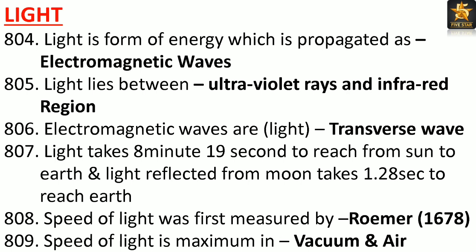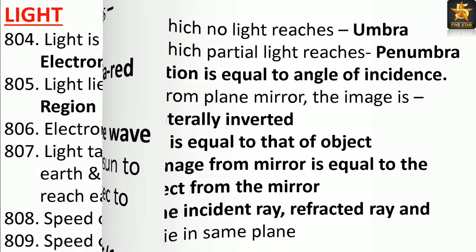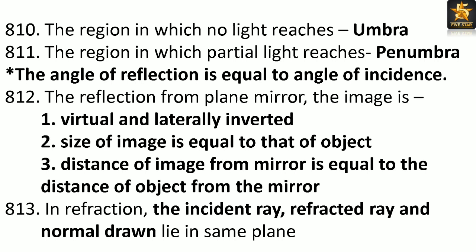Speed of light was first measured by Rømer in 1678. Speed of light is maximum in vacuum and air. The region in which no light reaches is called umbra. The region in which partial light reaches is called penumbra. The angle of reflection is equal to the angle of incidence. In reflection from a plane mirror, the image is virtual and laterally inverted, the size of the image equals that of the object, and the distance of the image from the mirror equals the distance of the object.